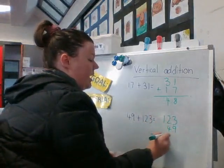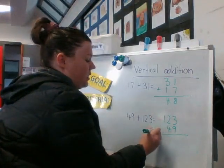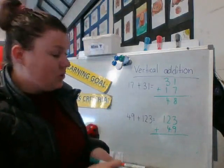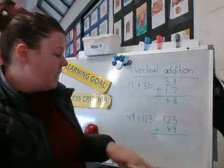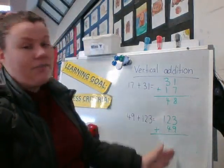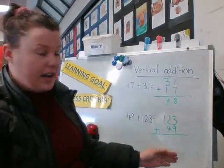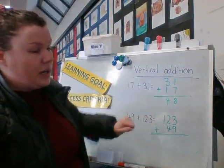Put my line underneath there again, my addition symbol. So I know that that's what I'm doing. I'm not subtracting or multiplying. And I need again to start from the right to get my question right. And there's three columns for me to work through this time around.